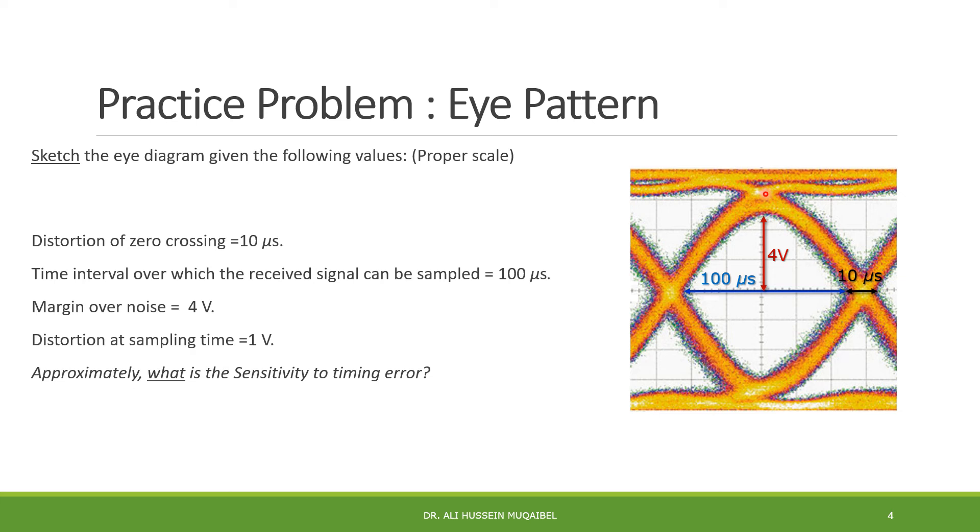Distortion at the sampling interval is here. Now it says approximately what is the sensitivity to timing error? Remember, this is related to the slope. So delta V over delta X, 4 volts divided by 50 microseconds. From here to here we have just 50 microseconds. Of course, it could be positive or negative; it depends on the pulse. So plus or minus 4 volts divided by 50 micro, and that's about plus or minus 80 kilovolts per second. So if you have an error of one second, you get 80 kilovolts. Of course, we're not at that scale. We use microseconds to represent the error, so you get millivolts for the error.